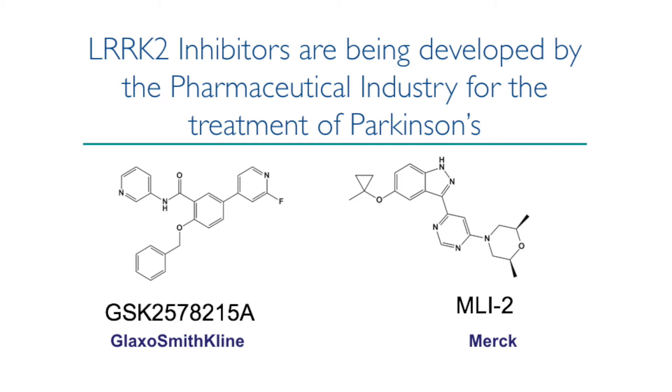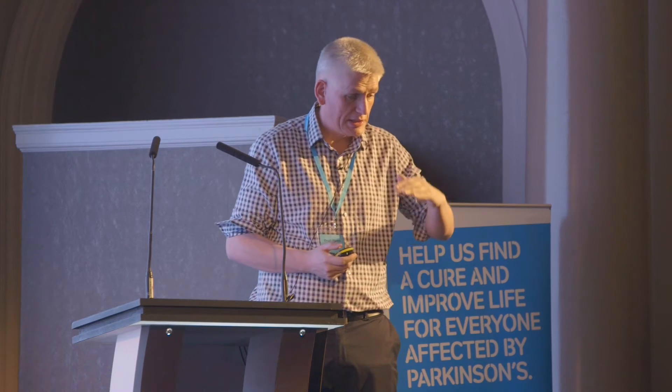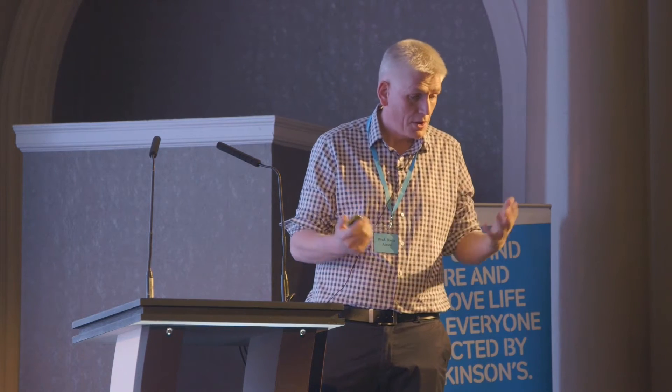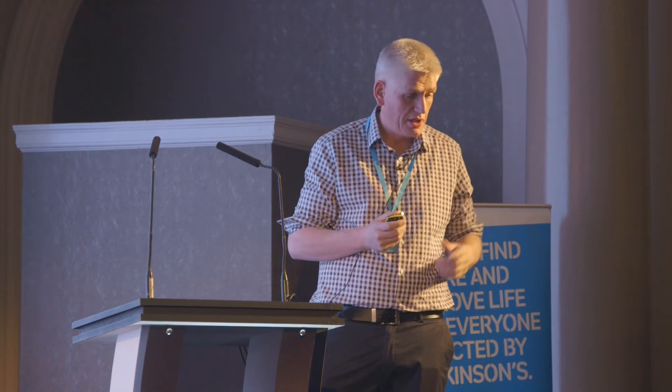This is the structure of the compound from GSK that has been reported. These are fantastic tool compounds for biologists to understand LRRK2 function — you can give them to neuronal cells, inject them into mice or other animal models of Parkinson's disease, and study how inhibiting the pathway impacts the disease. Companies are still tweaking the structures, and the precise molecular matter to be used in the clinical trial is still at the secret stage.